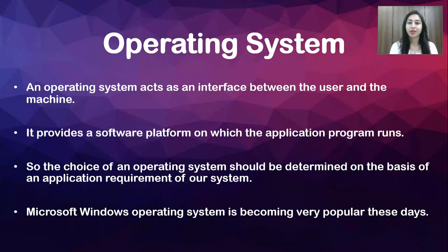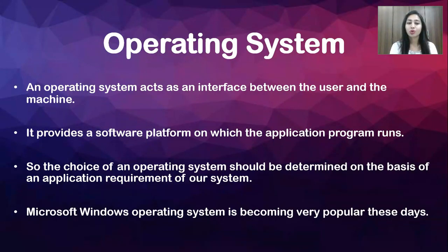First we will learn what is an operating system. An operating system acts as an interface between the user and the machine. It provides a software platform on which the application runs, so the choice of an operating system should be determined on the basis of an application's requirement. Microsoft Windows operating system is becoming very popular these days.